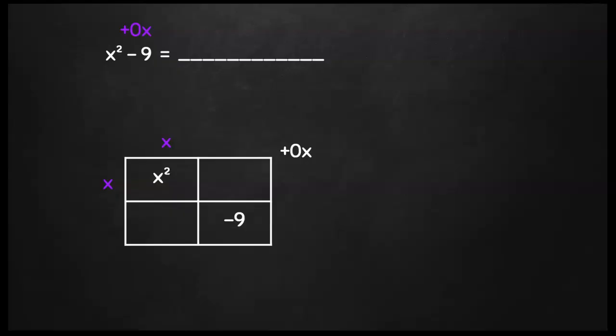Now two numbers that'll multiply to negative 9, I got 3 and negative 3. And do they actually get me that 0x? 3 minus 3 is that 0x, so that works. Now I can take my factors on the outside of my box and write them together: x plus 3 and x minus 3.